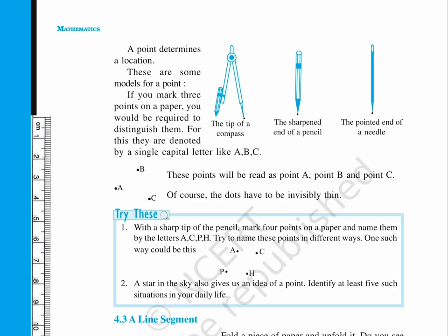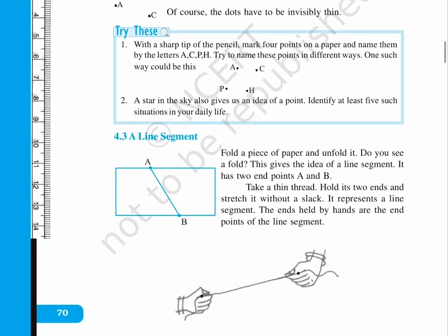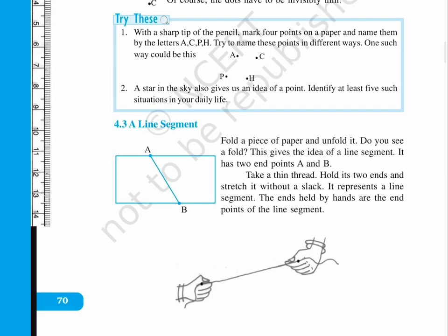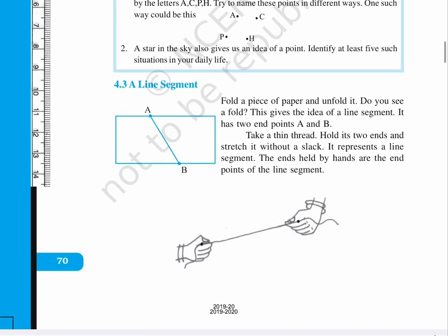One such way could be this: A, C, P, H. A star in the sky also gives us an idea of a point. Identify at least five such situations in your daily life.